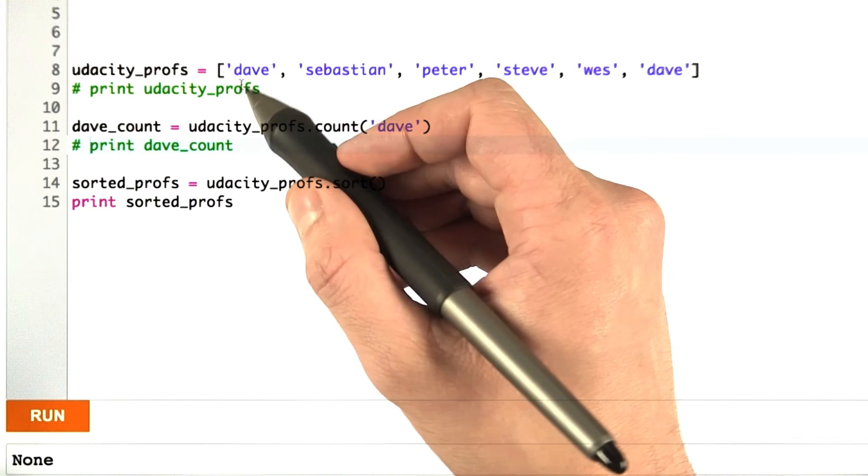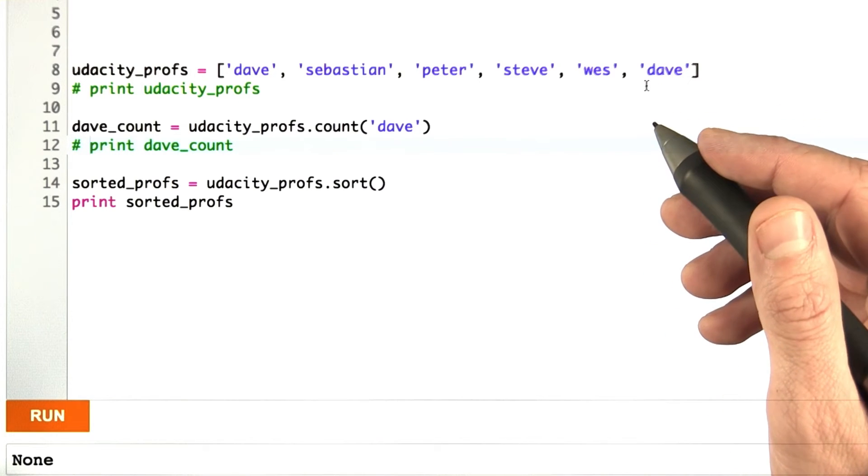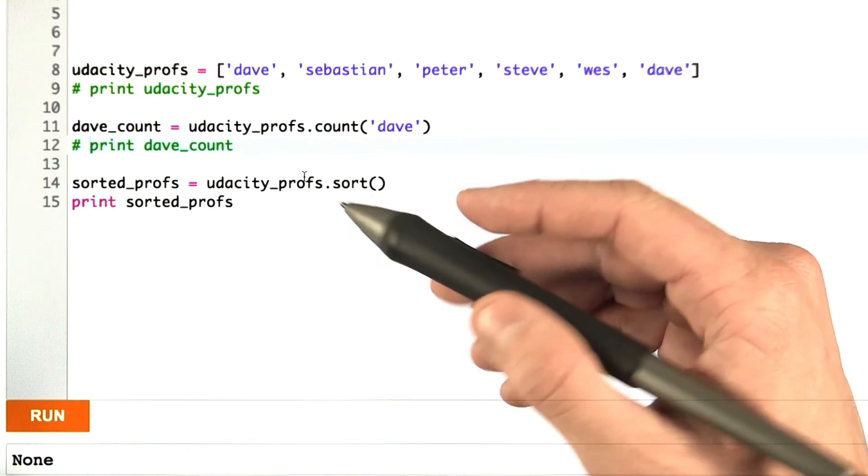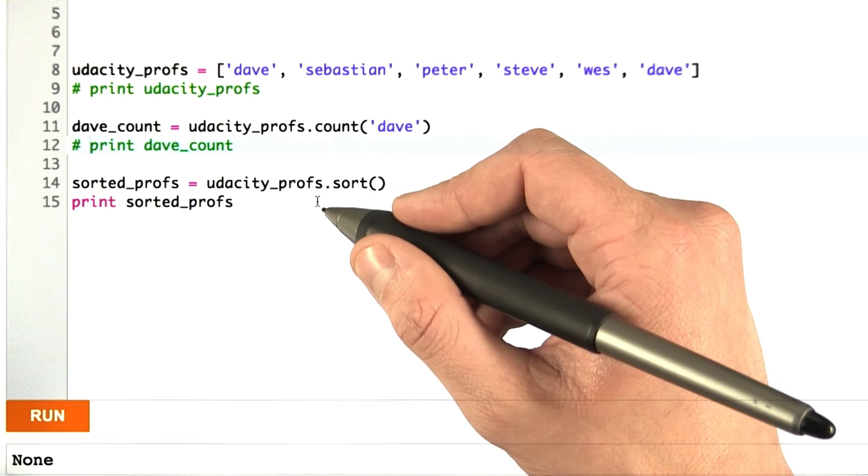I would have expected a sorted version of this list, and this is where that in place comes from that I was talking about before. Methods that work in place only modify the existing list. They modify UdacityProfs. They do not create a new list.